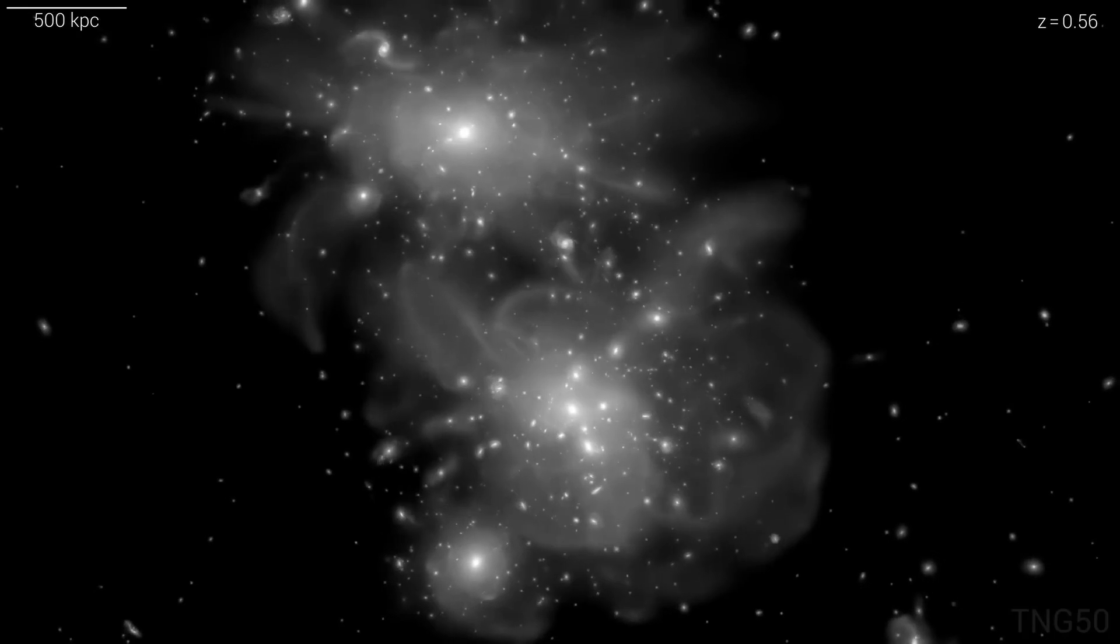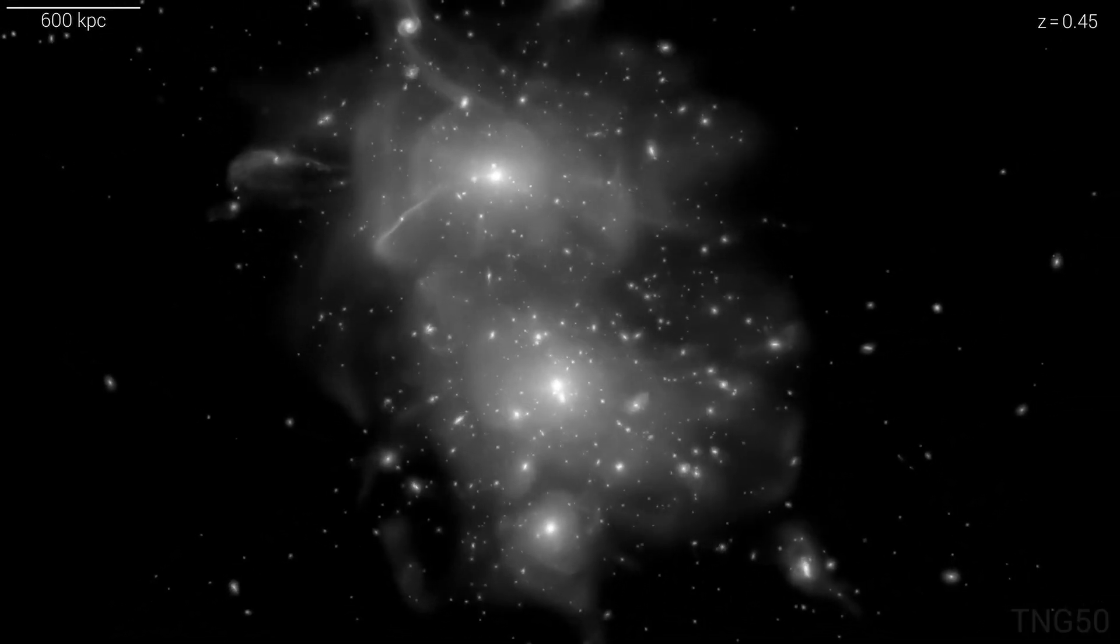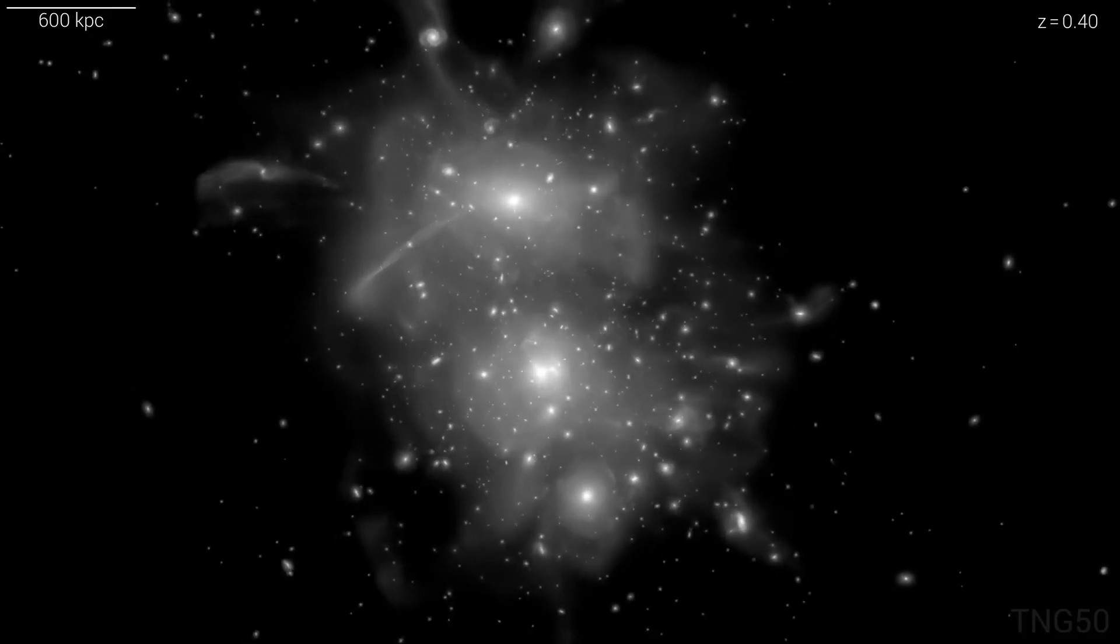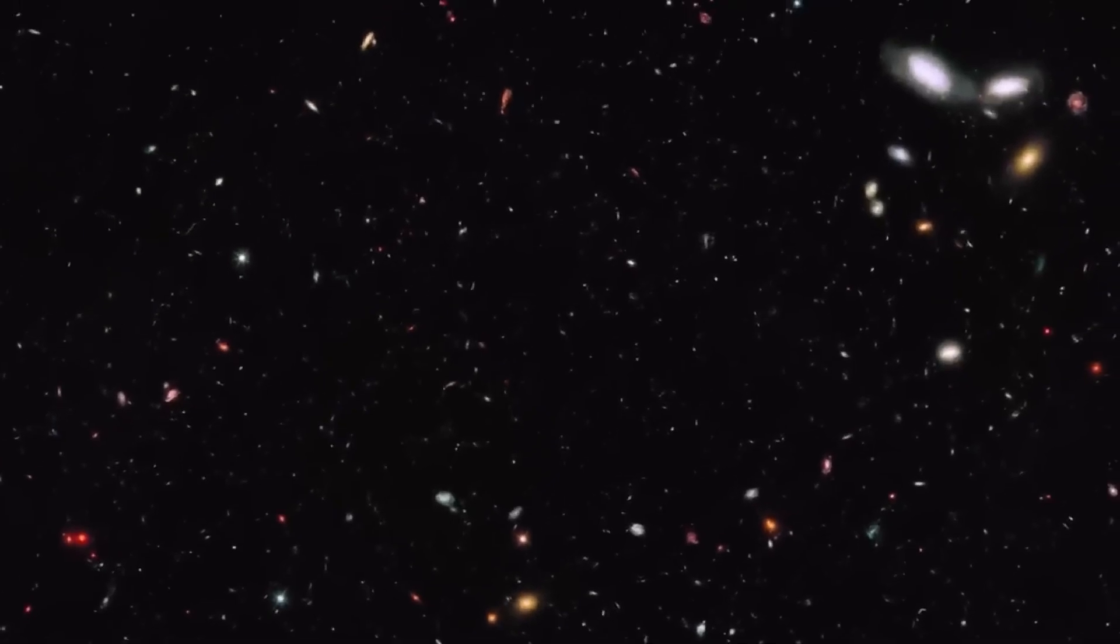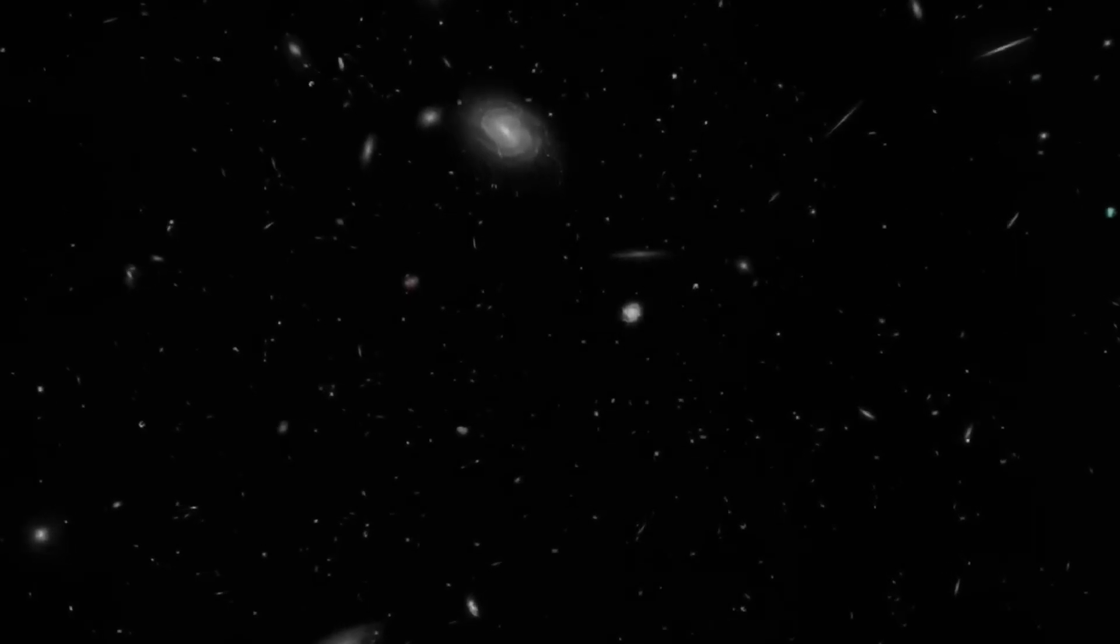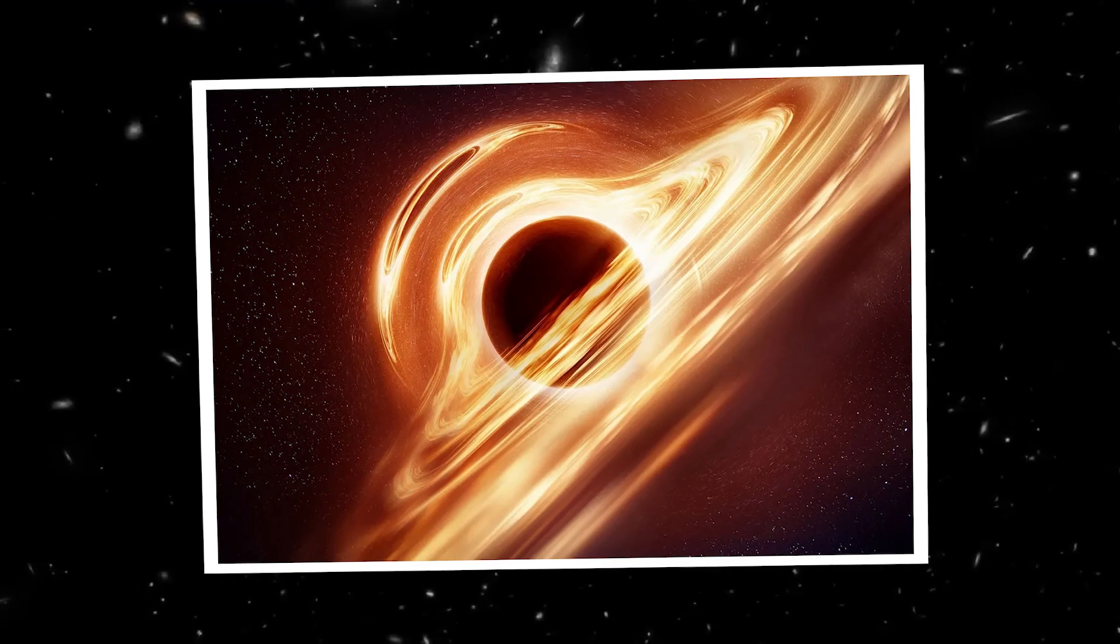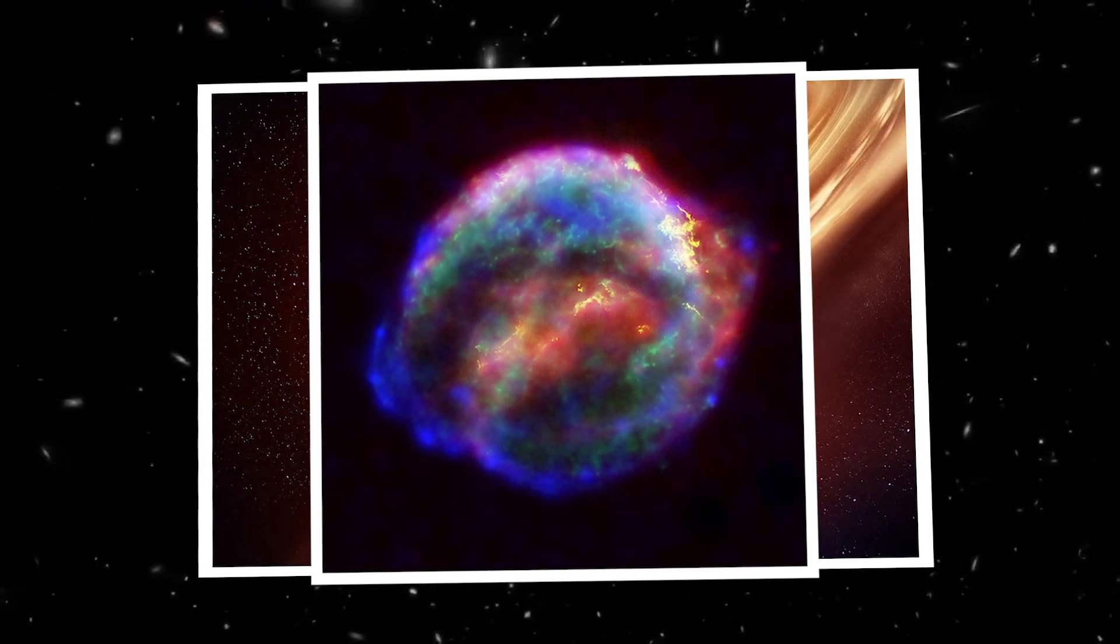Flamingo goes beyond considering gravity alone, for while dark matter makes up most of the mass of the universe, ordinary matter, despite representing only a fifth of the total mass, exerts a significant influence on the distribution of matter on smaller scales. Factors such as galactic winds, driven by supermassive black holes and supernova explosions, can affect the formation and evolution of galaxies.